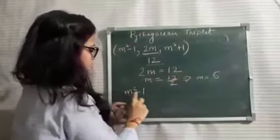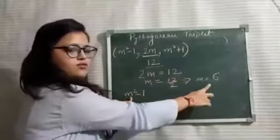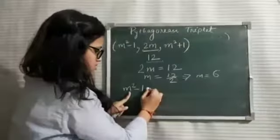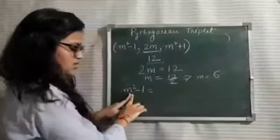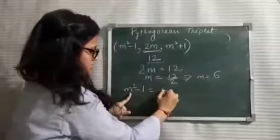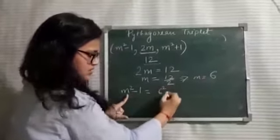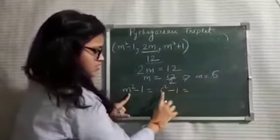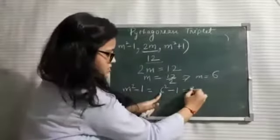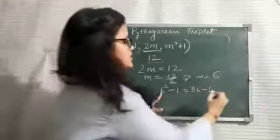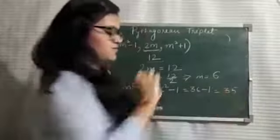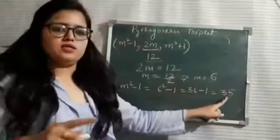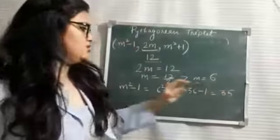M square minus 1, this is the first number. We have got the value of M. M is 6. Put this value 6 in this expression. M square, that means 6 square minus 1. Square of 6 is 36 minus 1 is equal to 35. So, 35 is the second number of the Pythagorean triplet.